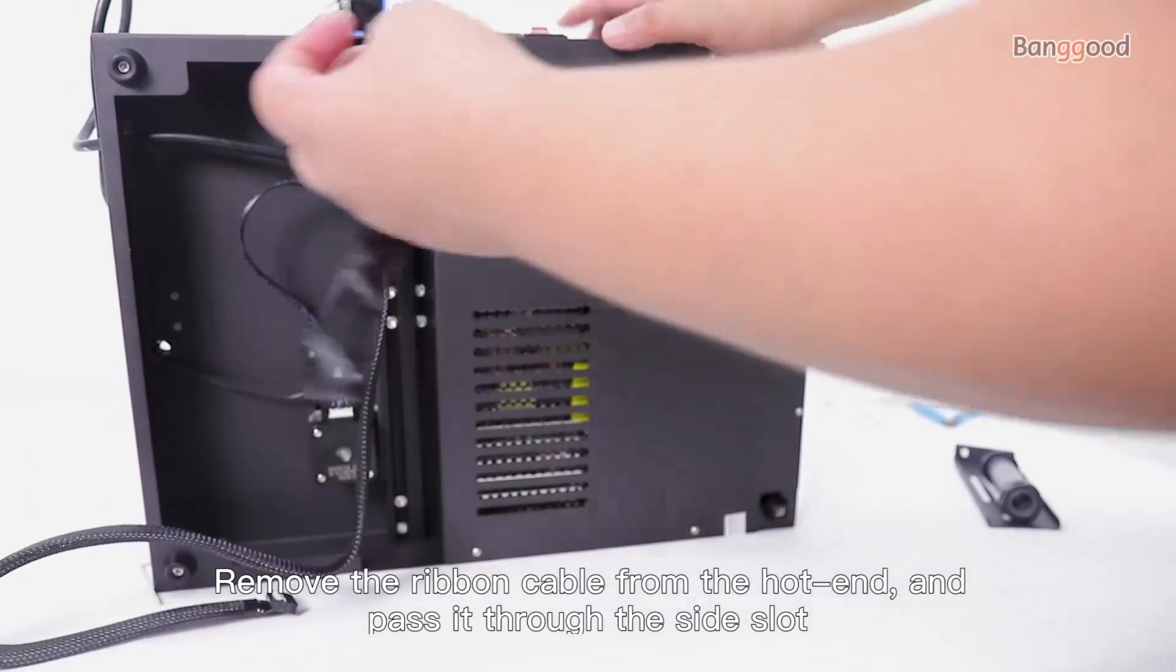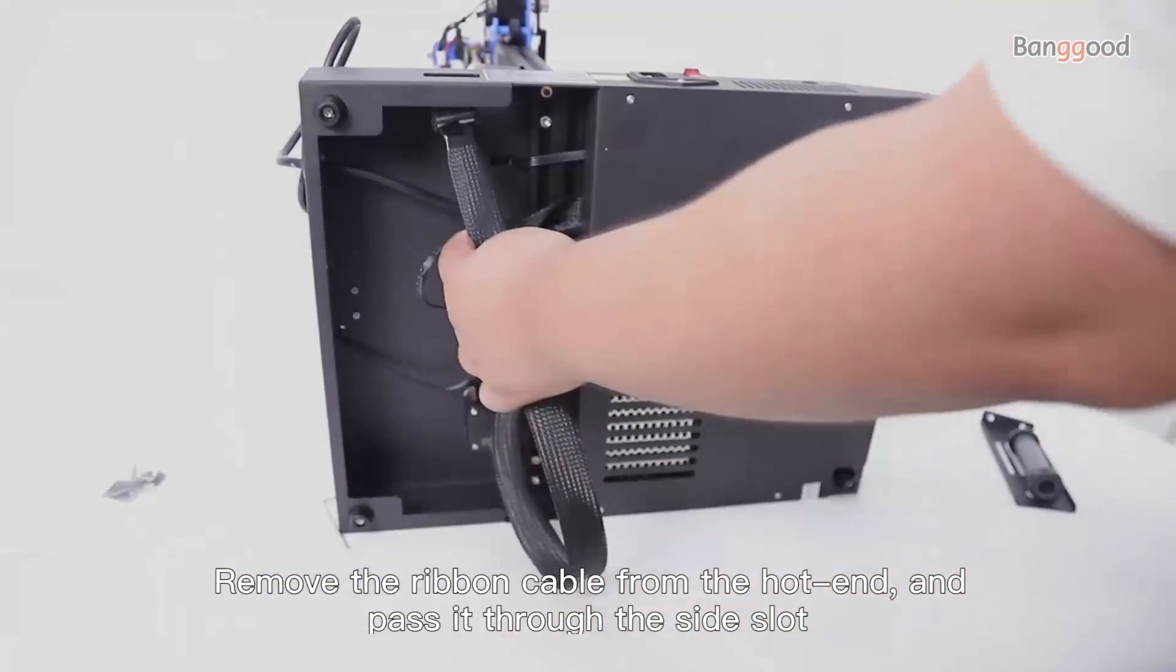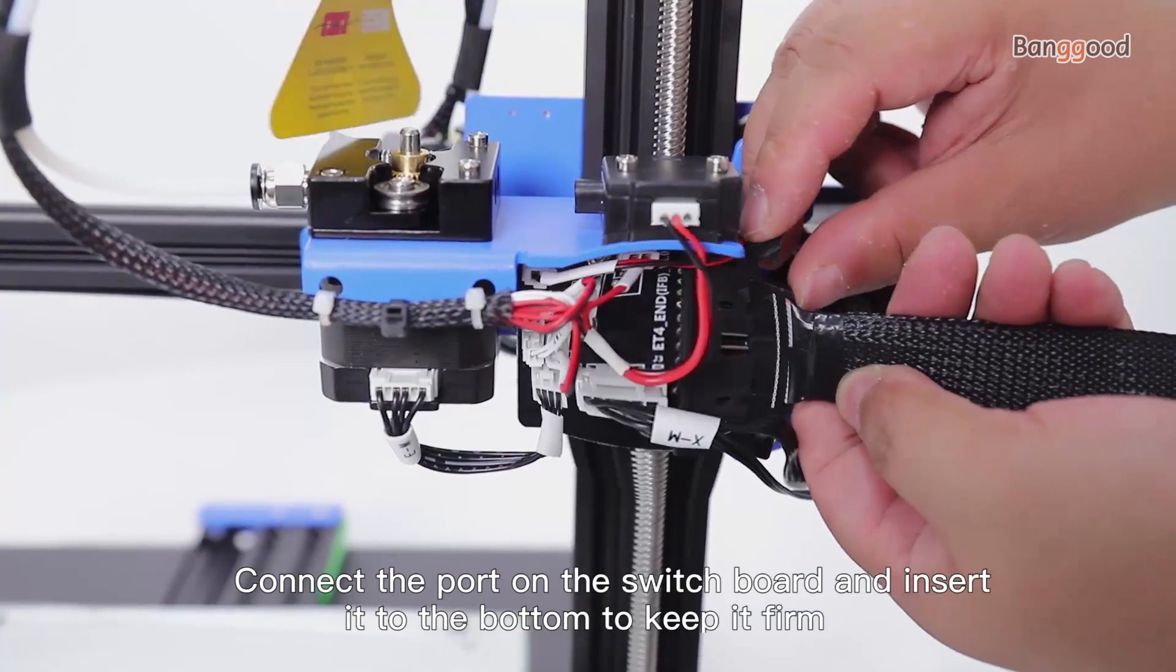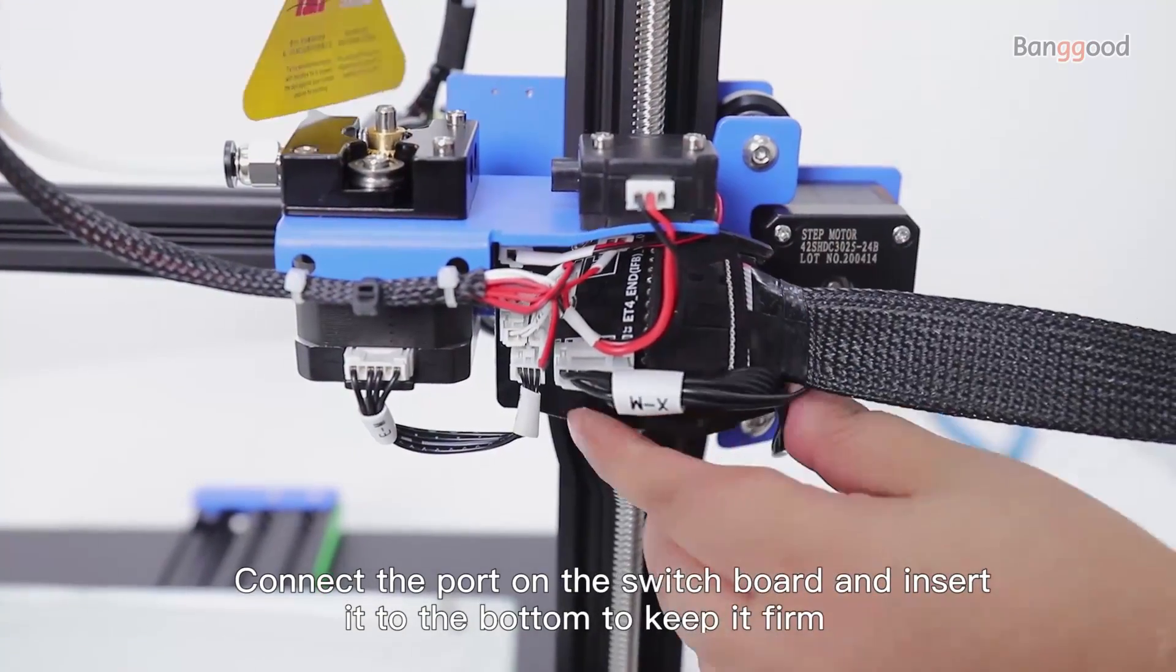Remove the ribbon cable from the hot end and pass it through the side slot. Connect the port on the switchboard and insert it to the bottom to keep it firm.